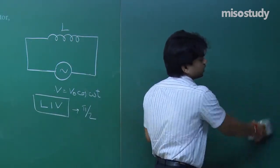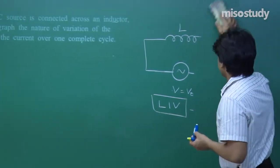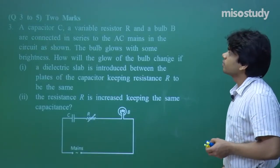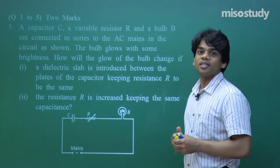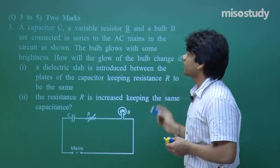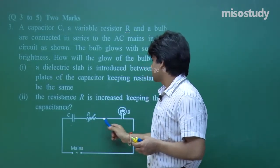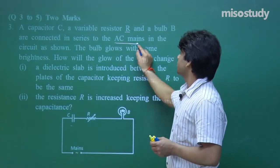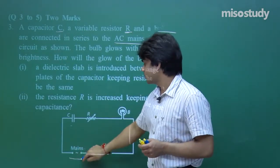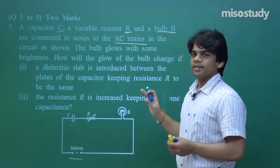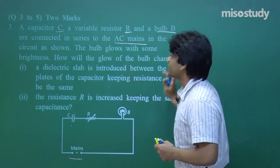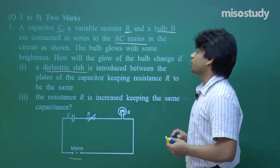Easy question — you can do all such questions. Next question, question number 3: a capacitor C, a variable resistor R, and a bulb B are connected in series to the AC mains. The bulb glows with some brightness. How will the glow of the bulb change if a dielectric slab is introduced between the plates of the capacitor, keeping resistance R the same?